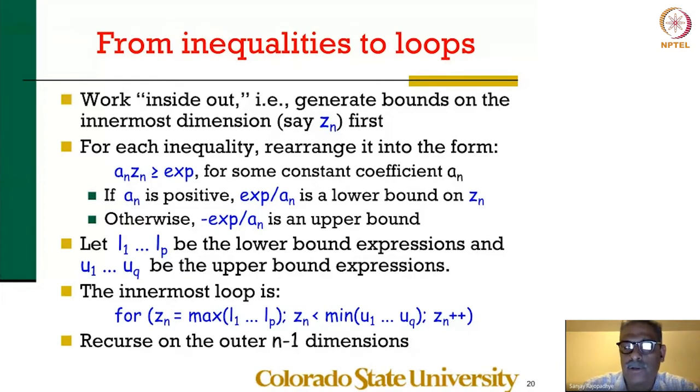I wanted to generate a loop program that visited all those points in the polyhedron. I found the way to generate the innermost loop, which is the lower bounds on the innermost index as some lower bound expressions involving all the n minus 1 indices and also some upper bound expressions on the same n minus 1 indices.